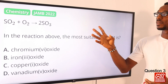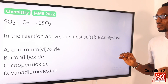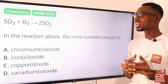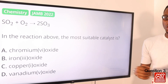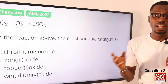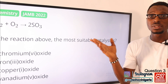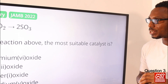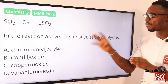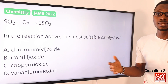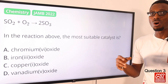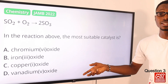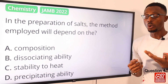Question three: SO2 and oxygen reacting to give SO3 — the most suitable catalyst is what? Ordinarily this will not happen to yield a good product, so we need to make adjustments to pressure and temperature, looking at around 400 degrees Celsius and above. We need a catalyst to influence this process. We are looking at platinized asbestos or vanadium(V) oxide. Option D is the correct option.